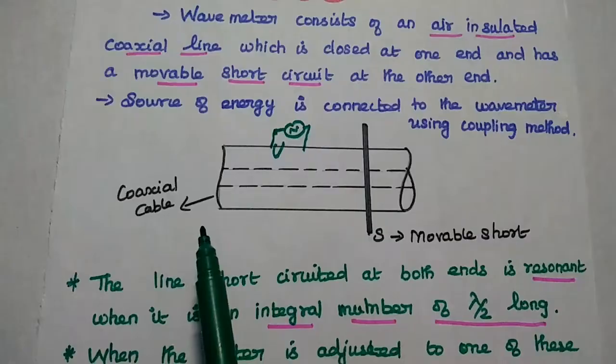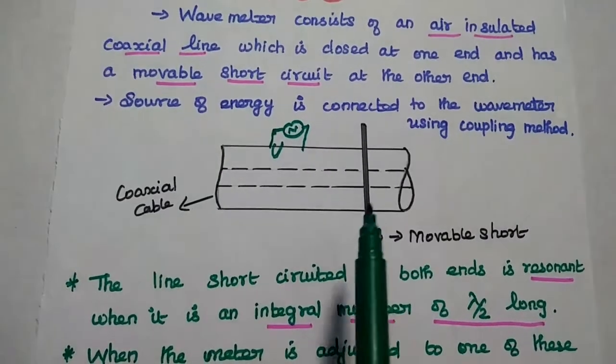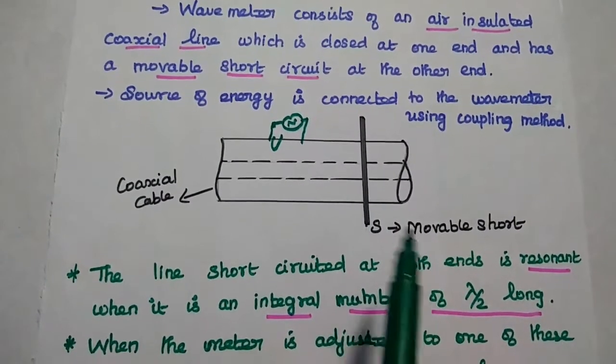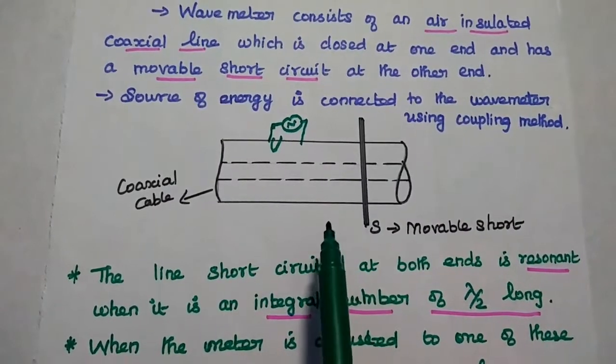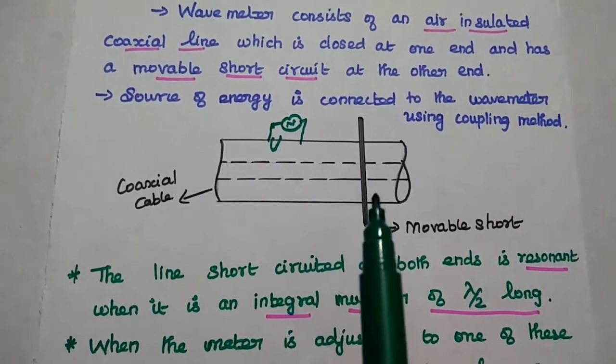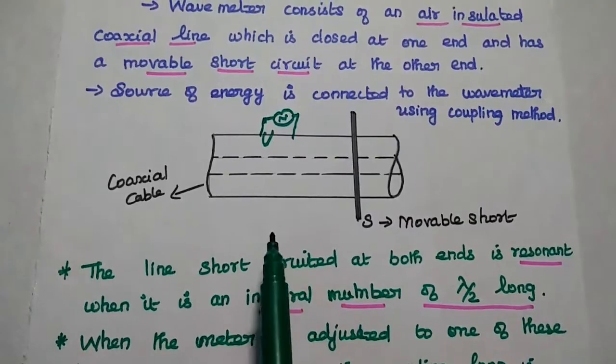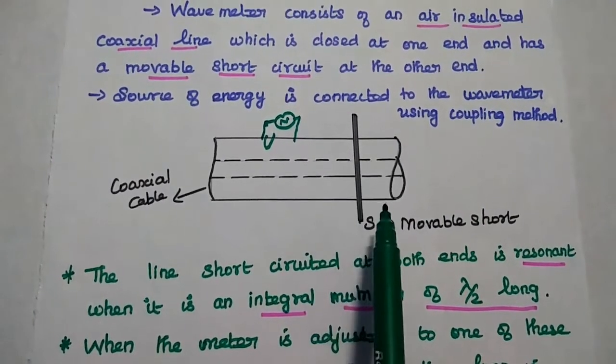In this wave meter, one end is short-circuited by default. The other end is connected with the movable short. The line short-circuited at both ends is resonant when it is an integral multiple of lambda by 2.